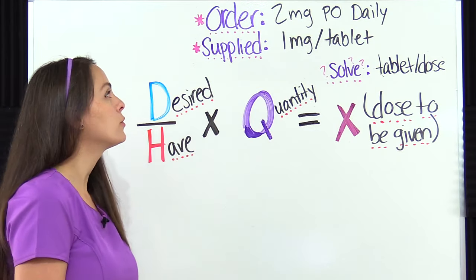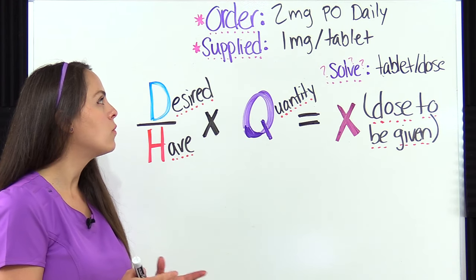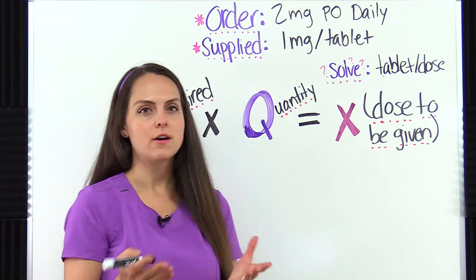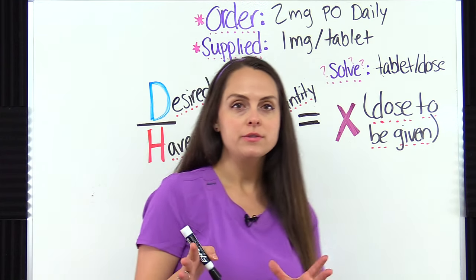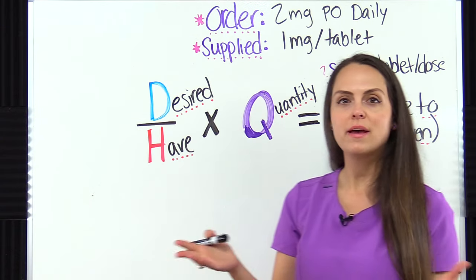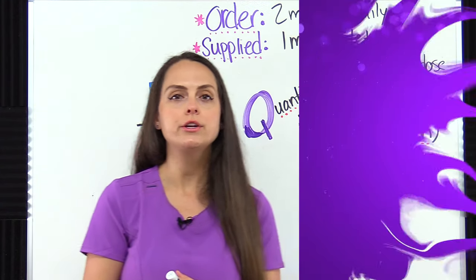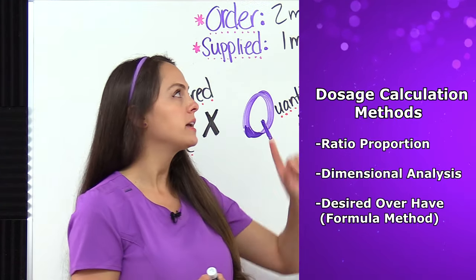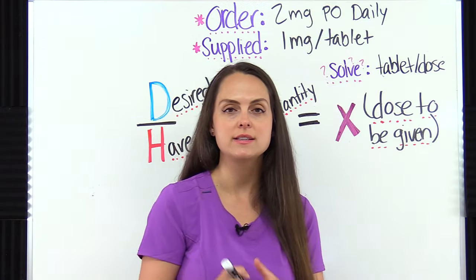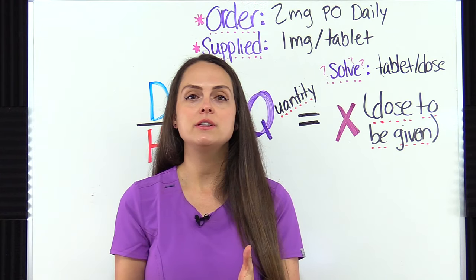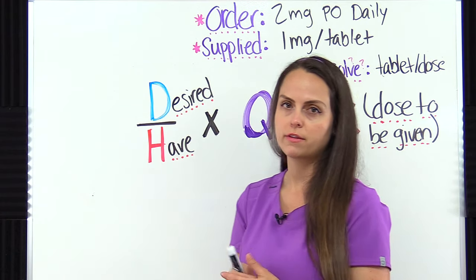The problem says the physician ordered two milligrams by mouth daily and we're supplied with one milligram tablets. So we need to solve for how many tablets we're going to give per dose, using the desired over have method. There are other methods you can use to solve dosage calculations — ratio proportion or dimensional analysis. The method you use really depends on your preference and what your nursing program may require.